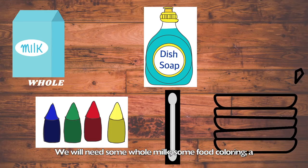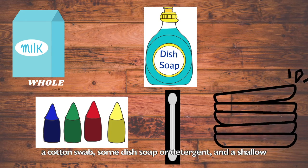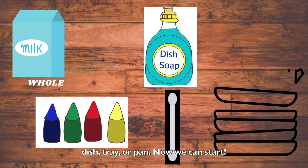We will need some whole milk, some food coloring, a cotton swab, dish soap or detergent, and a shallow dish tray or pan. Now we can start.